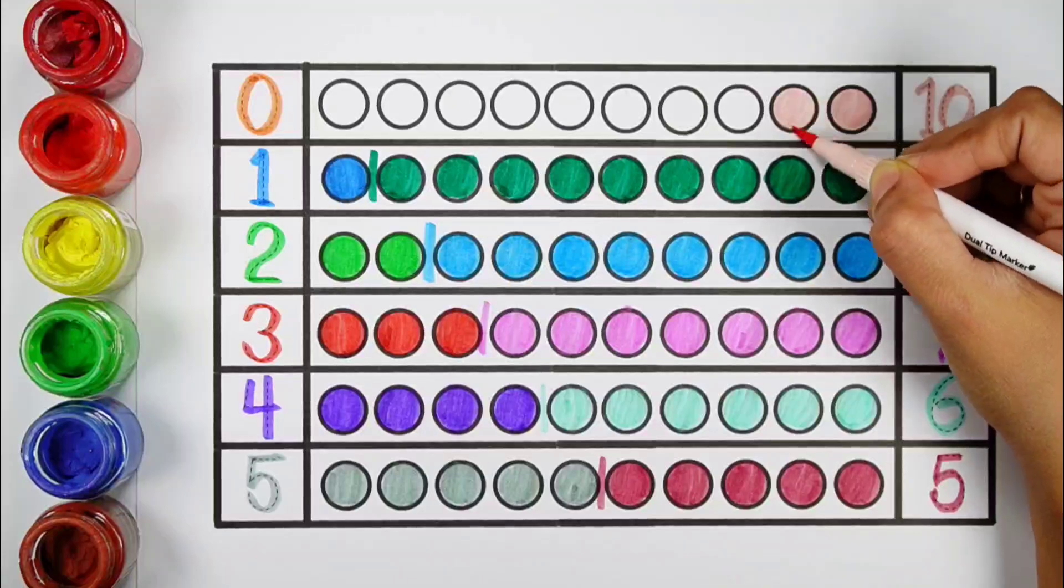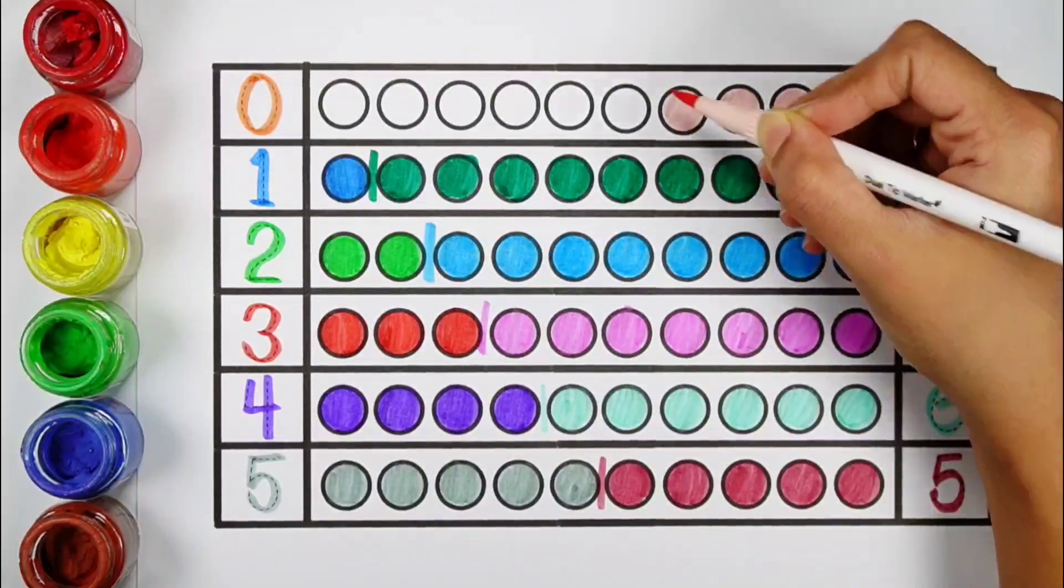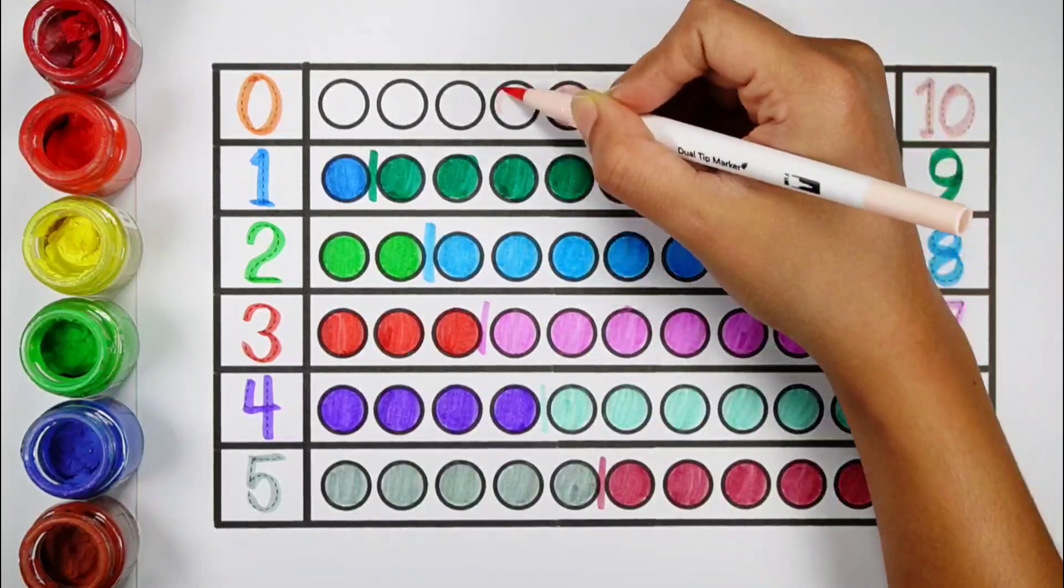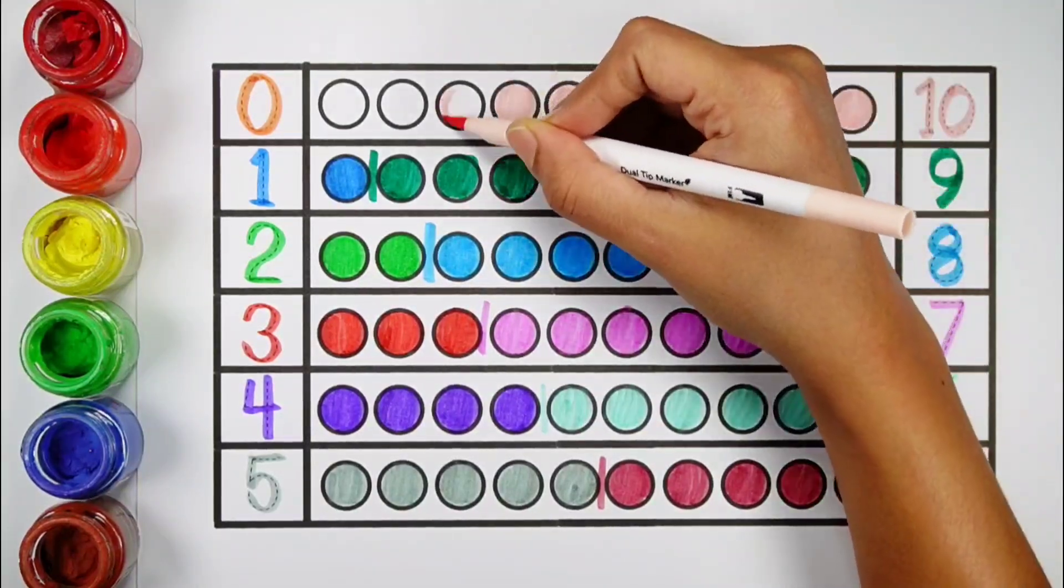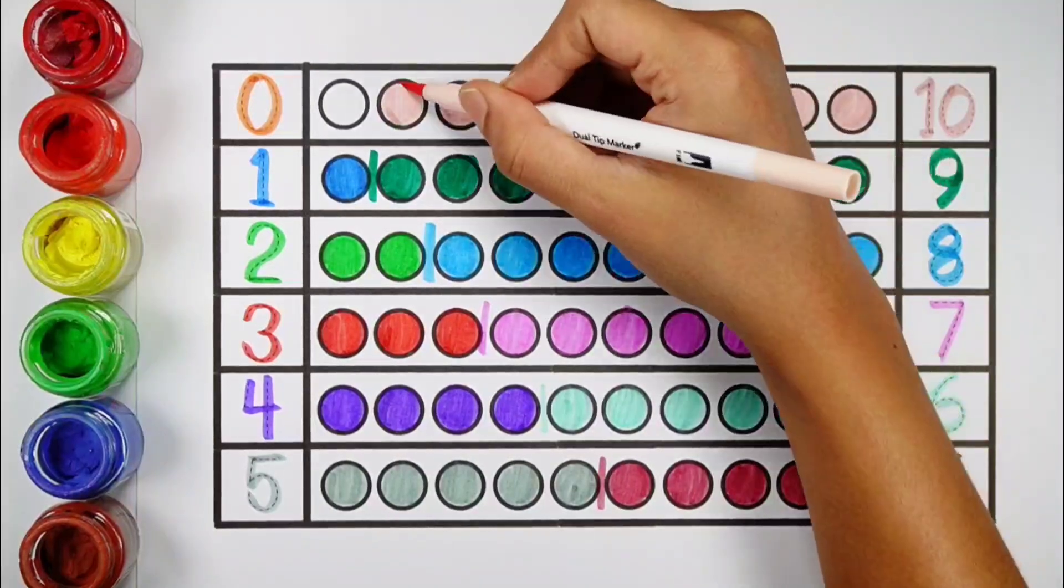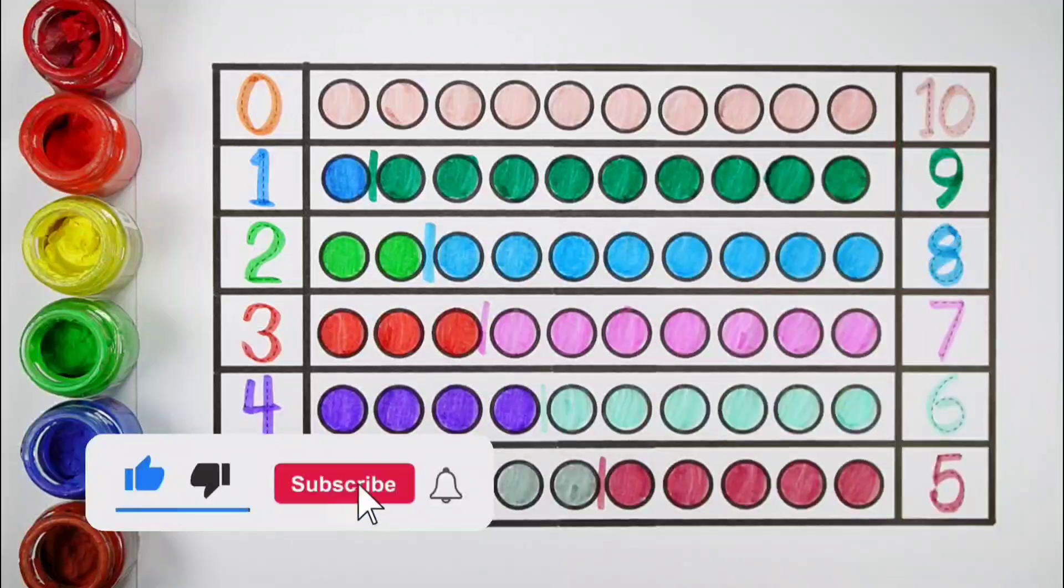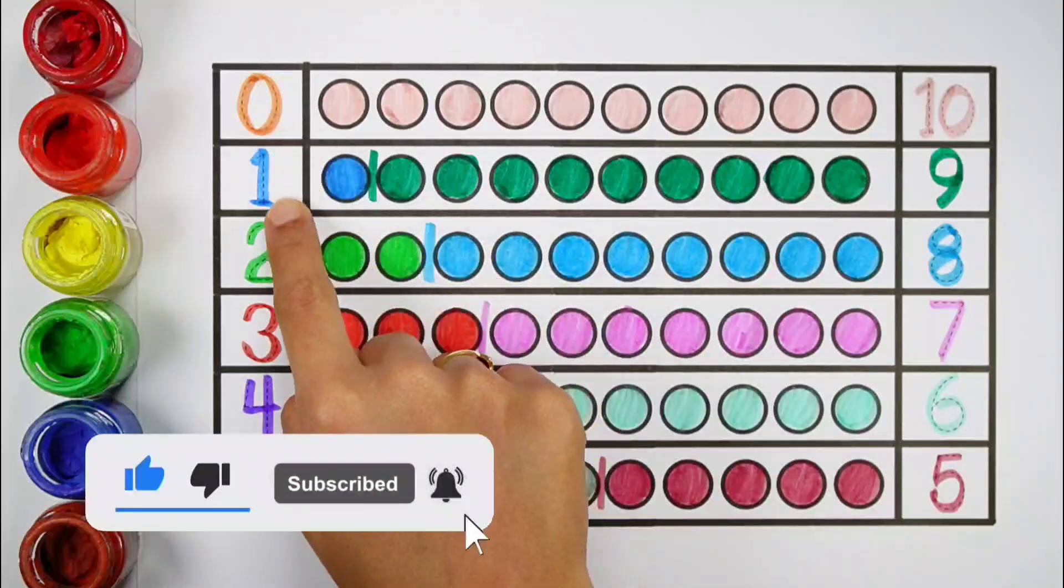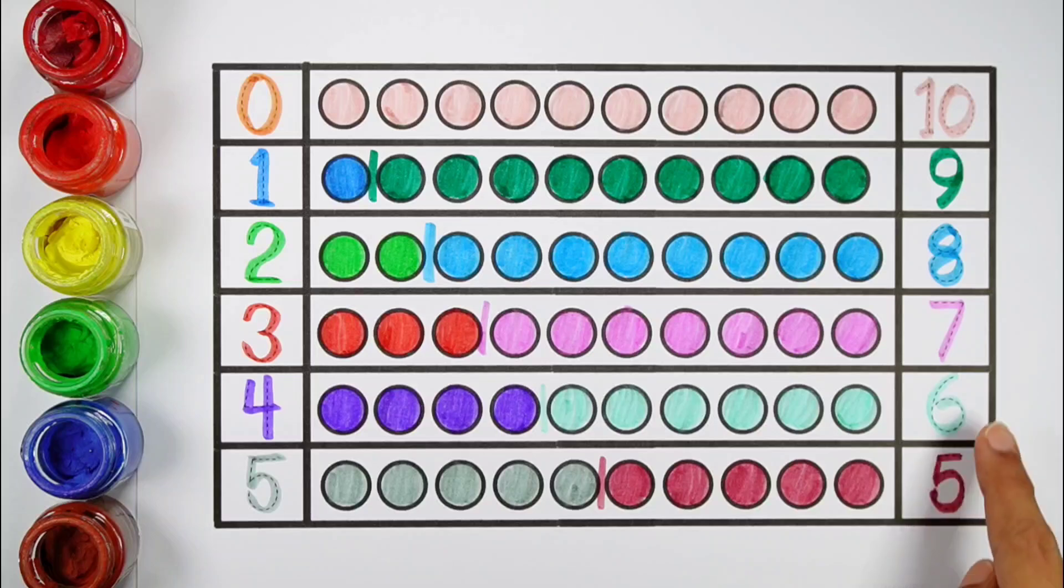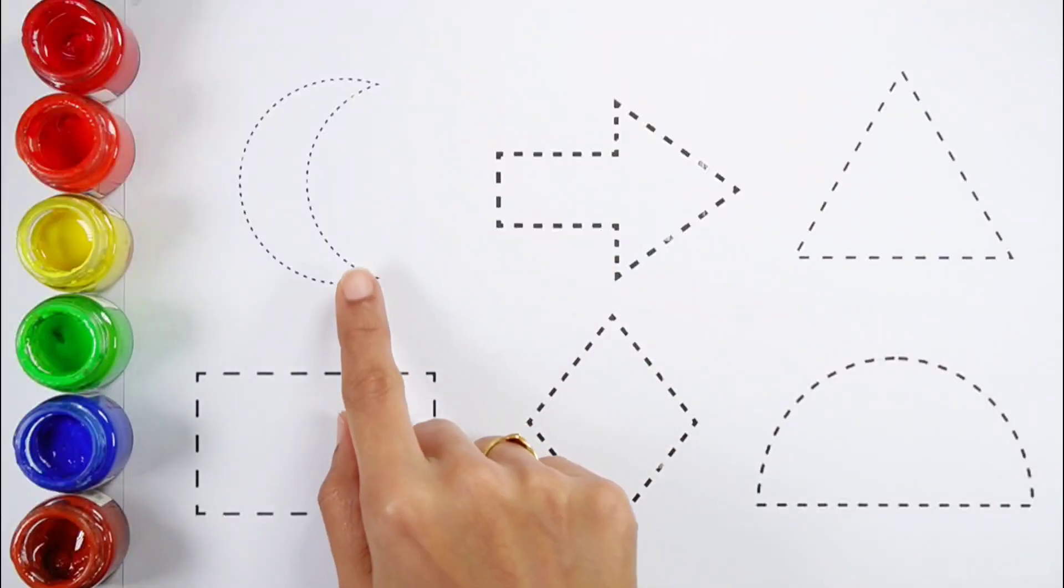1, 2, 3, 4, 5, 6, 7, 8, 9, 10, 10 bolts. 1, 2, 3, 4, 5, 6, 7, 8, 9, 10, 0, 1, 2, 3, 4, 5, 5, 6, 7, 8, 9, 10.